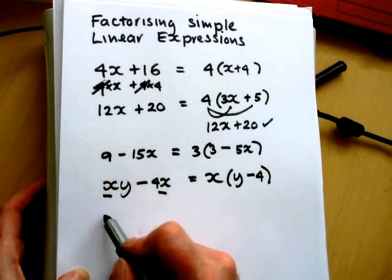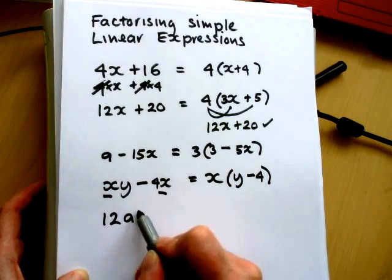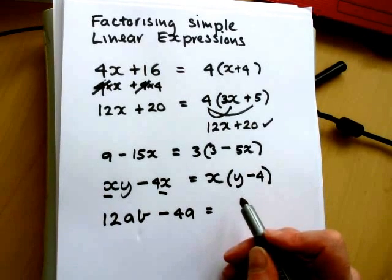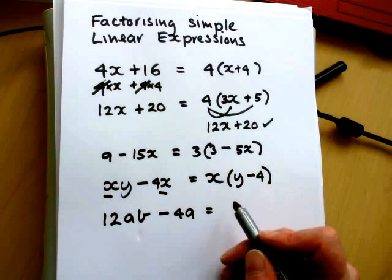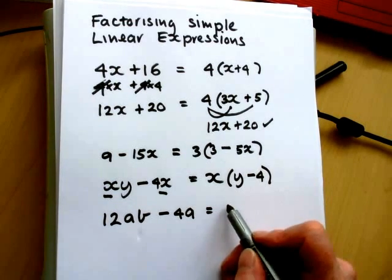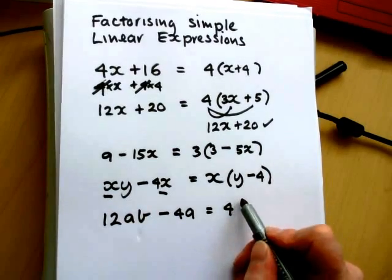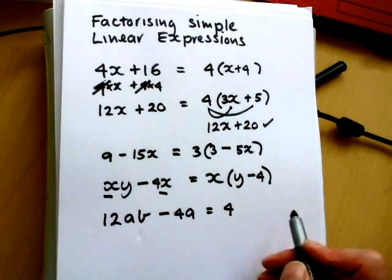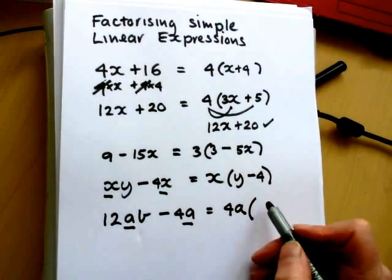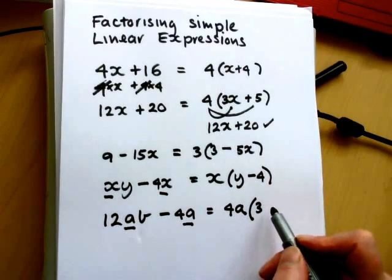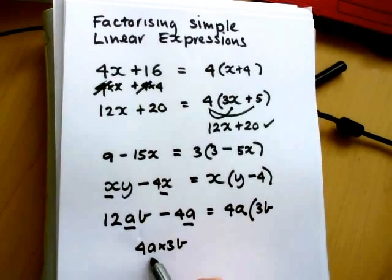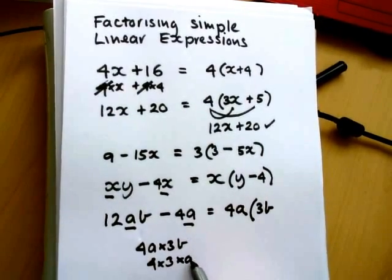So we'll have a look at one more that involves letters and numbers. 12ab minus 4a. Now quite often in this example, quite a few students would perhaps only get one of the marks. The first thing you should notice is that there's the number 4 going into both terms. So we'll put the 4 on the outside. Now a lot of students would write brackets now and miss a mark. What we should also notice is that we have an a in both terms. So it's 4a on the outside. We're going to need a 3 to get the 12 and the b because 4a times 3b equals 4 times 3 times ab.